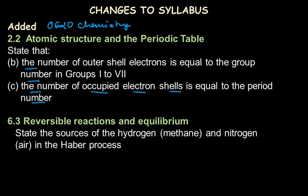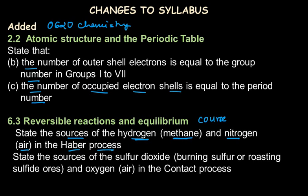Another change is in the topic of reversible reactions and equilibrium. It is now required to state the sources of hydrogen and nitrogen in the Haber process — hydrogen is produced from methane and nitrogen from fractional distillation of liquid air. Additionally, the sources of sulfur dioxide, that is burning sulfur or roasting sulfide ores, and oxygen in the contact process are now specified.